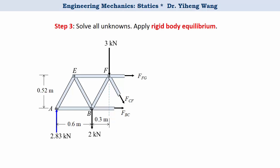Remember, normally we would write two force equations and one moment equation. However, note how force BC and force CF are concurrent, and force CF and force FG are also concurrent. Therefore it will be convenient to write two moment equilibrium equations about point C and point F.